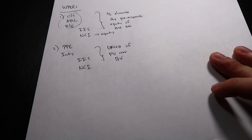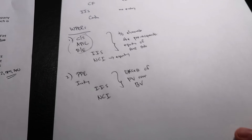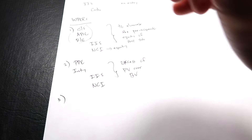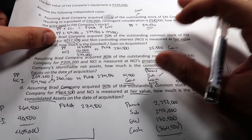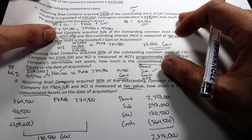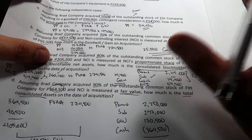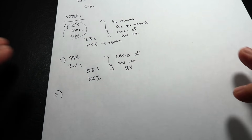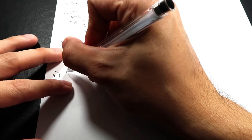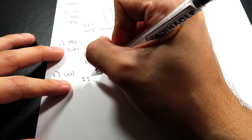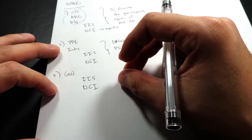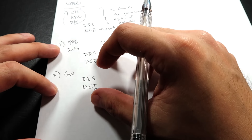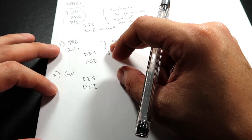Going back to the working paper entries, we have a third entry: to recognize goodwill. The entry is debit Goodwill, credit Investment in Subsidiary, credit NCI. The goodwill will then appear in the consolidated balance sheet as an asset. On the other hand, if it's a gain on bargain purchase, the credit side would be a gain instead.